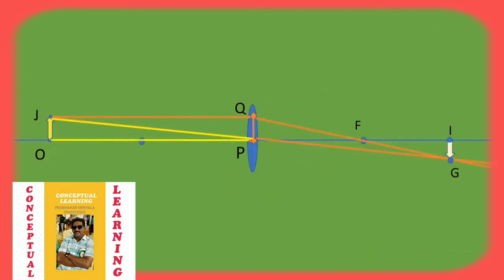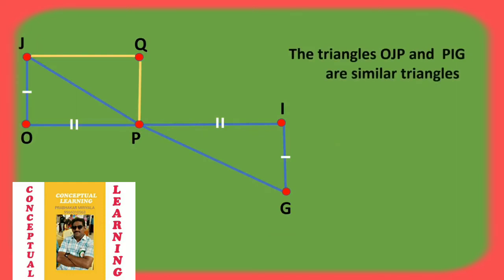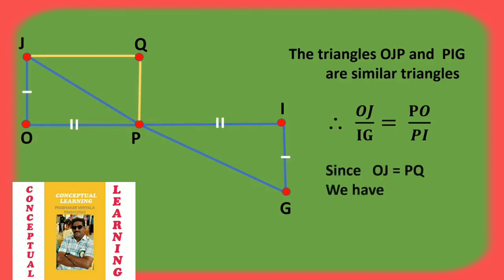In the same way, triangle PJO and triangle PIG are also similar triangles. So from the similar triangles principle, OJ/IG = PO/PI. We know that OJ = PQ, so we have PQ/IG = PO/PI, which is equation number 3.